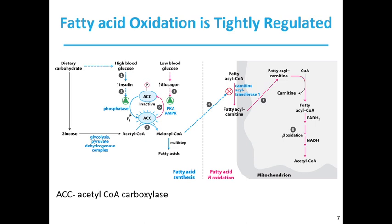Fatty acid oxidation consumes a precious fuel and is regulated to occur only when the organism's need for energy requires it. When the diet provides a ready source of carbohydrate as fuel, beta-oxidation of fatty acids is not necessary and is therefore down-regulated. There are two enzymes key to the coordination of fatty acid metabolism. The first is acetyl-CoA carboxylase (ACC), which converts acetyl-CoA to malonyl-CoA — the first step in fatty acid synthesis. The second is carnitine acyltransferase-1, which limits the transport of fatty acids into the mitochondrial matrix for beta-oxidation.